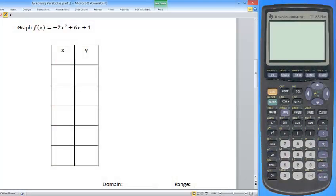In today's lesson, we're going to take a look at graphing the quadratic function -2x² + 6x + 1. We're going to do that by creating a table, and we're going to start our table at our vertex.